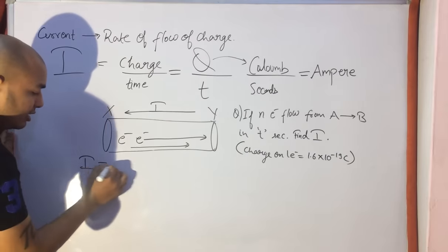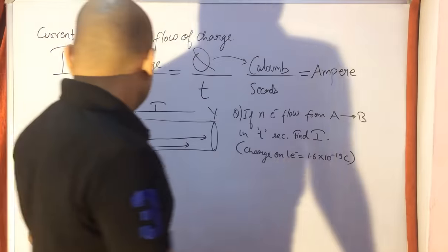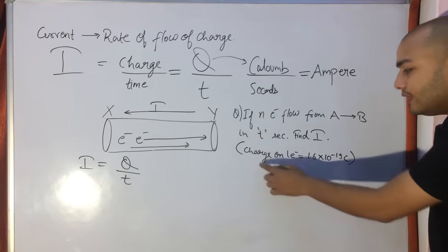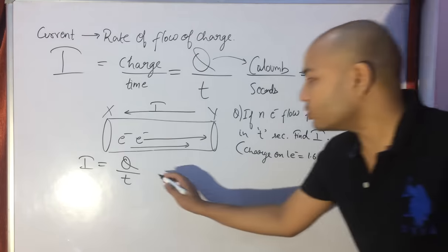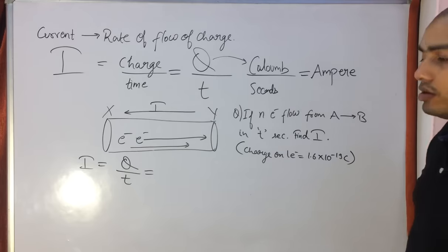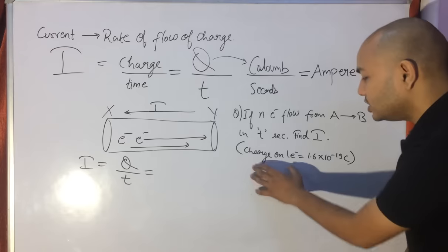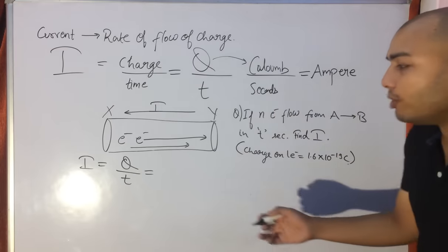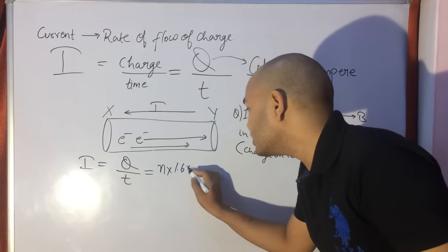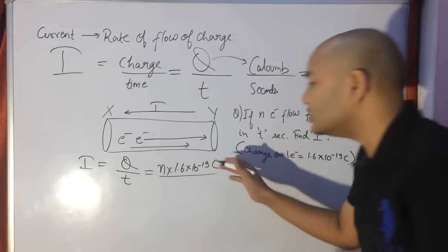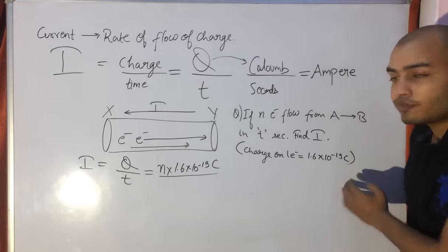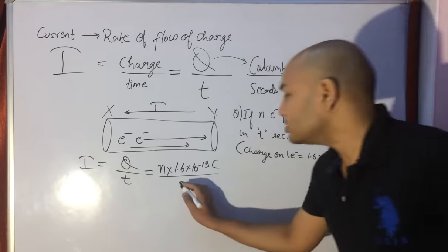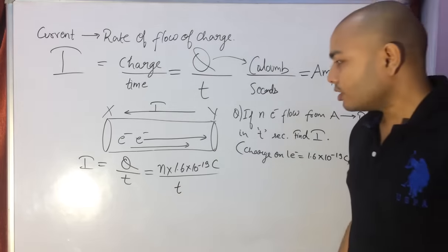The formula for current is I = Q/T. Here, N electrons are flowing and the charge on one electron is 1.6 × 10⁻¹⁹ coulombs. So the total charge Q is the charge on one electron multiplied by the number of electrons: N × 1.6 × 10⁻¹⁹ coulombs. If one electron flows, that much charge flows; two electrons — double; three — triple; N electrons — N times that charge. Time is T, so that gives us the answer.